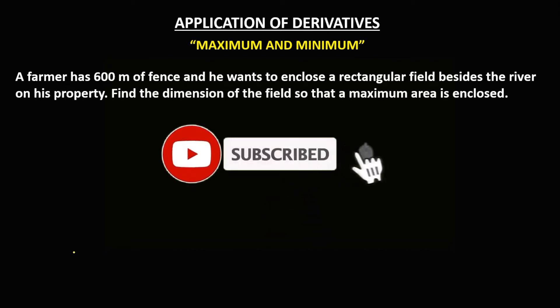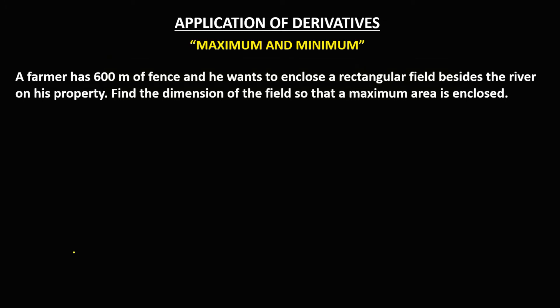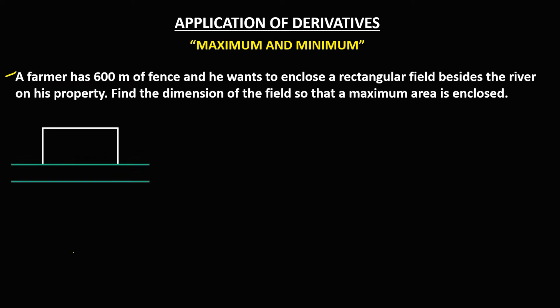Welcome to Mathstoria. Today's topic is the application of derivatives: finding the maximum and the minimum. We have this problem: a farmer has 600 meters of fence and wants to enclose a rectangular field beside a river on his property. We need to find the dimensions of the field so that the maximum area is enclosed. This is the rectangular field beside the river, with sides labeled y and x.